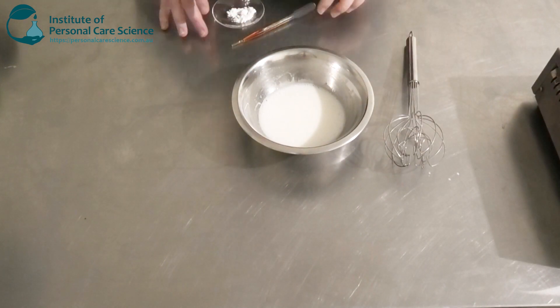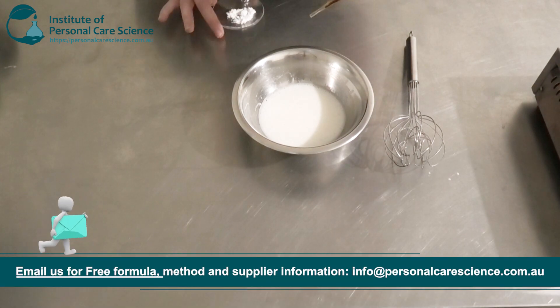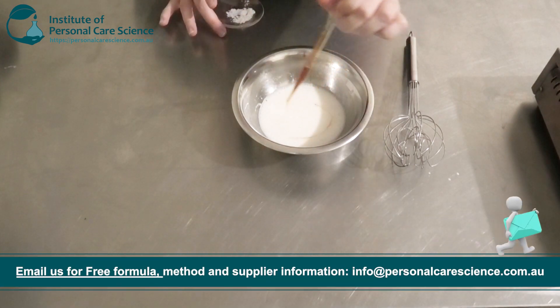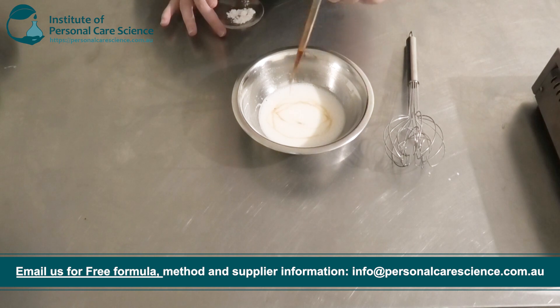Now once it is cool, we're going to add our heat sensitive materials. So I'm going to add some tocopherol to my emulsion as I have used some natural plant oils. This is going to help with oxidation.